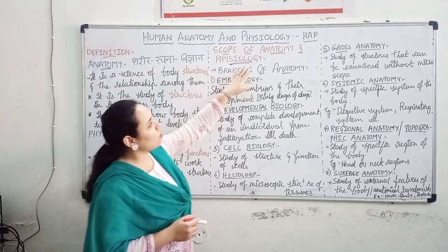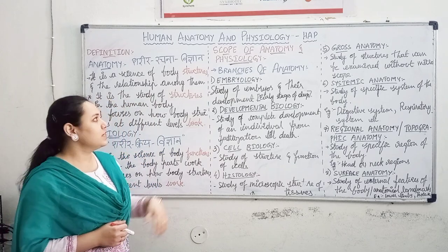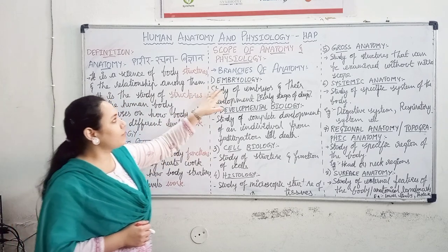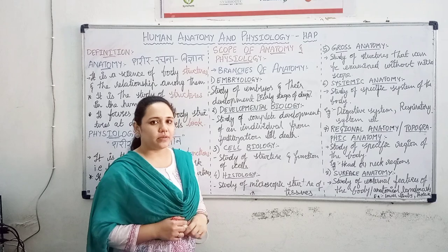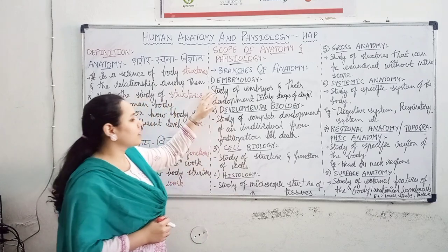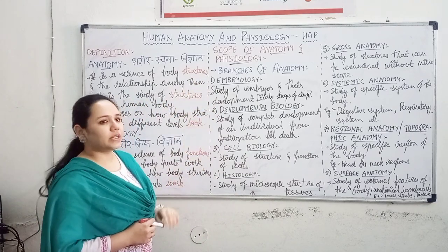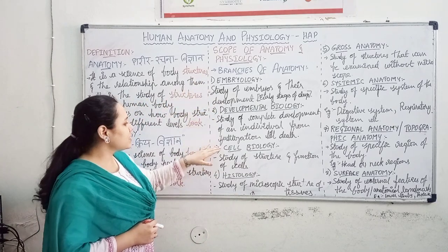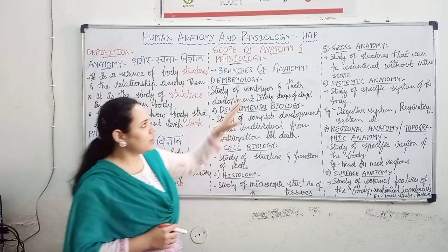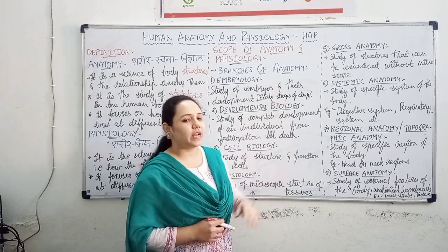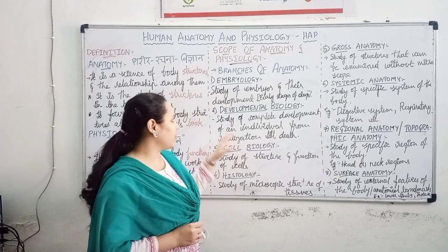Coming to the scope of Anatomy and Physiology — there are different branches that come under anatomy. They include embryology, developmental biology, cell biology, histology, gross anatomy, systemic anatomy, and more.